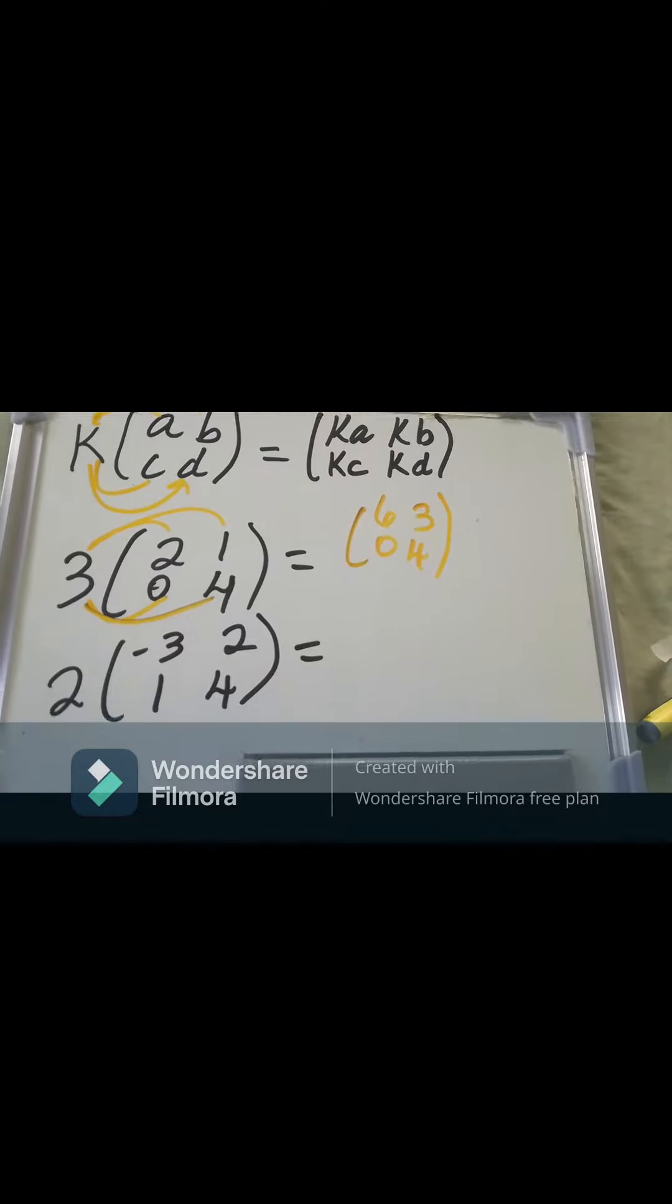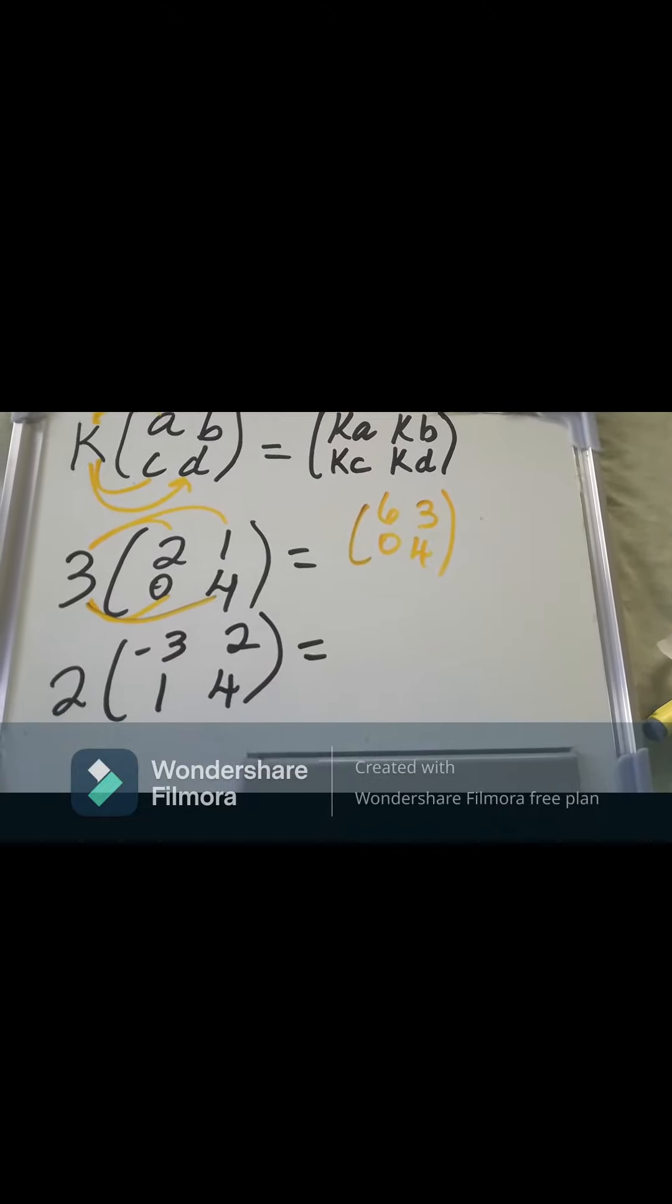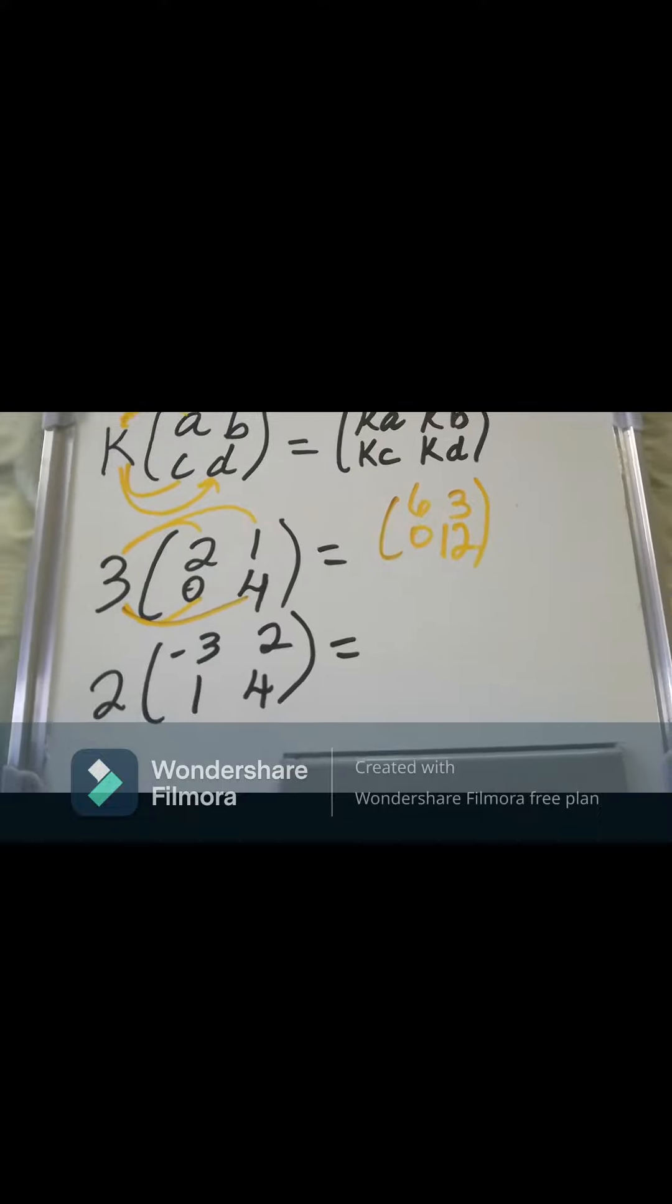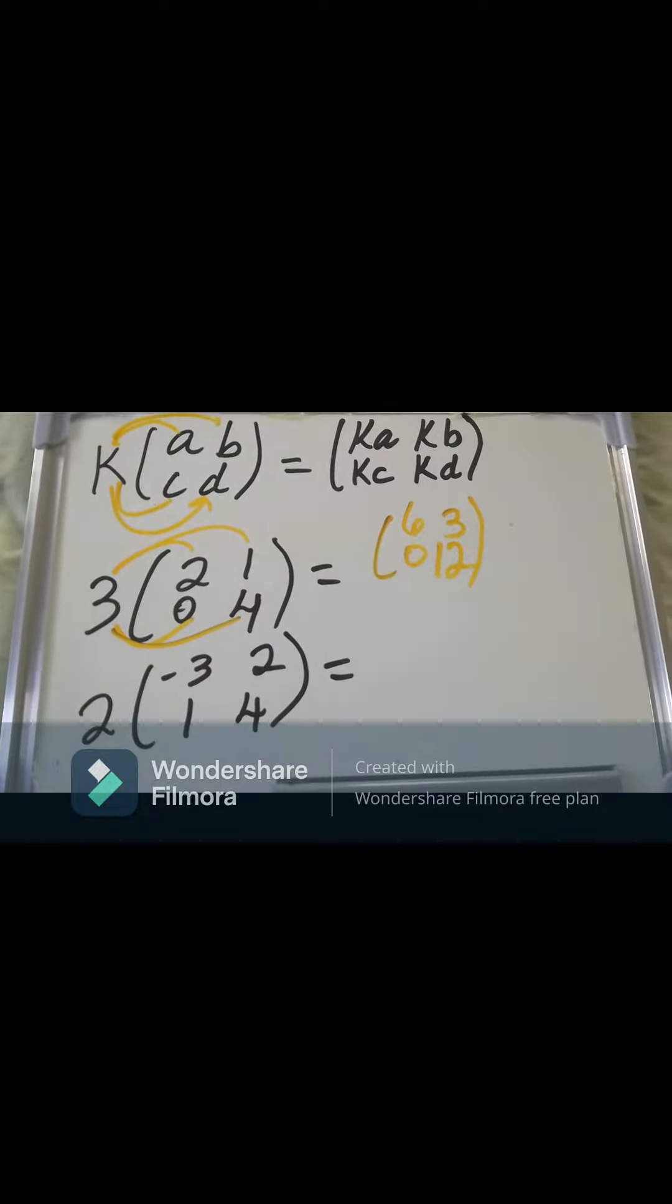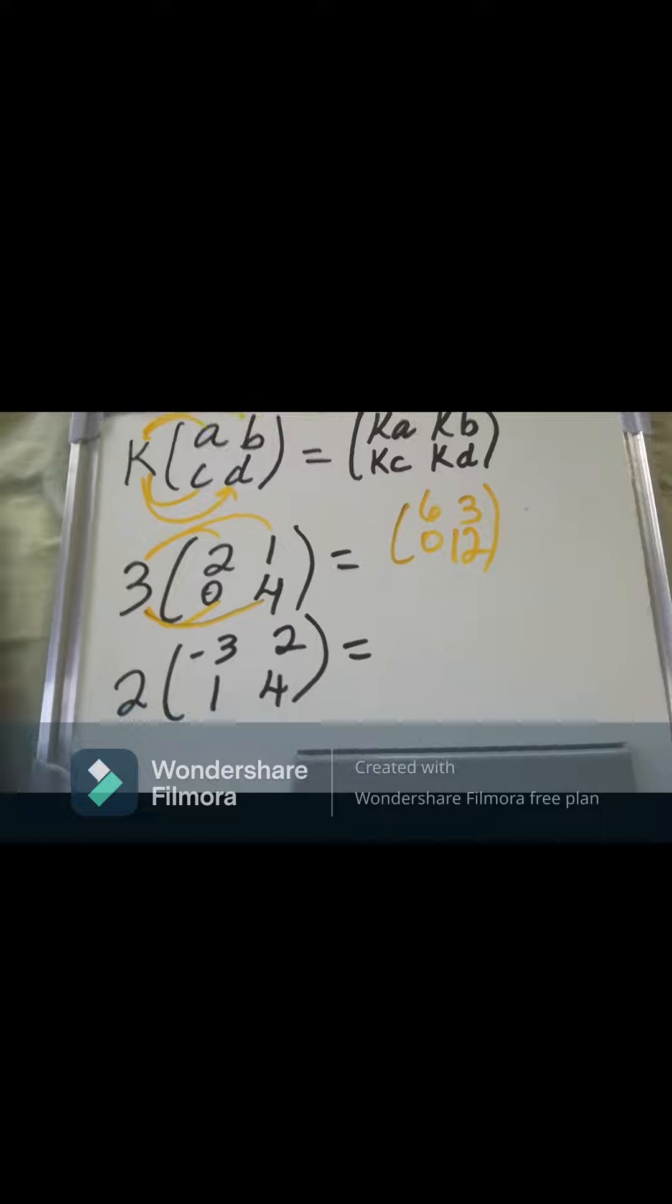Now, KA, KB, KC, KD. Now what does that translate when we have a number? So the 3 is outside, and the 3 is going to be multiplied by everything that's inside of the bracket, or the matrix.